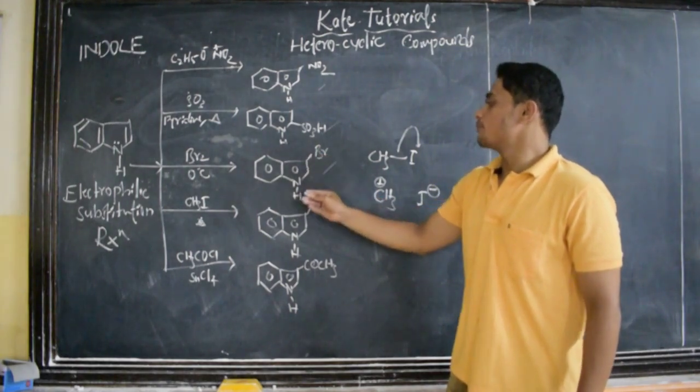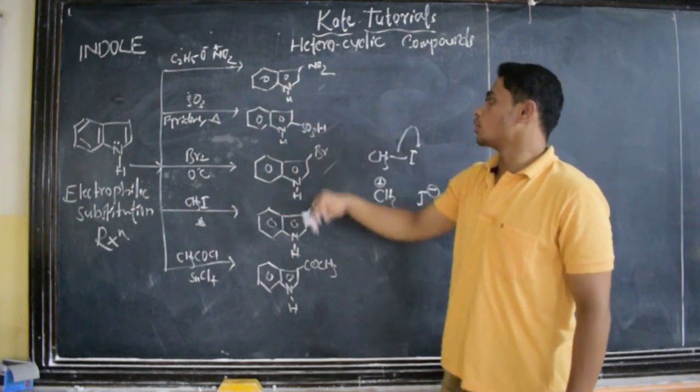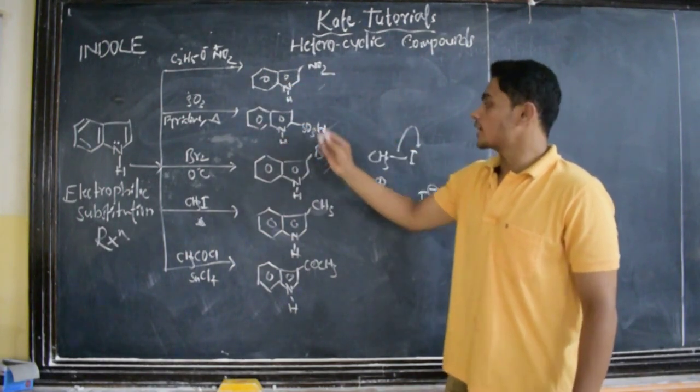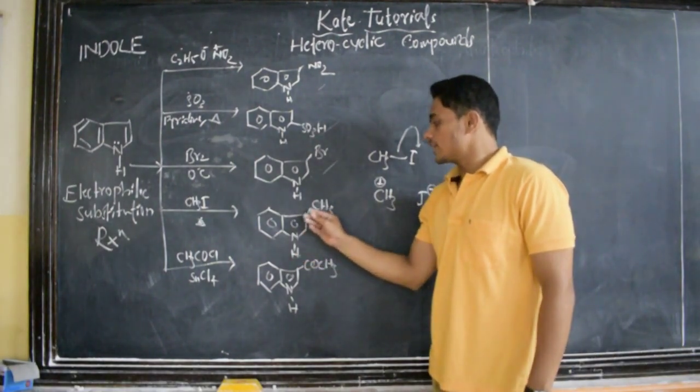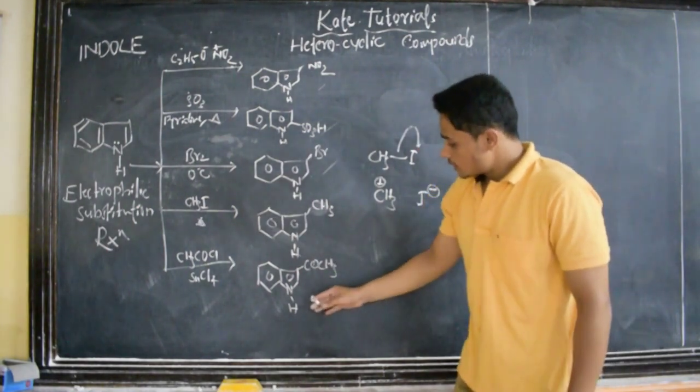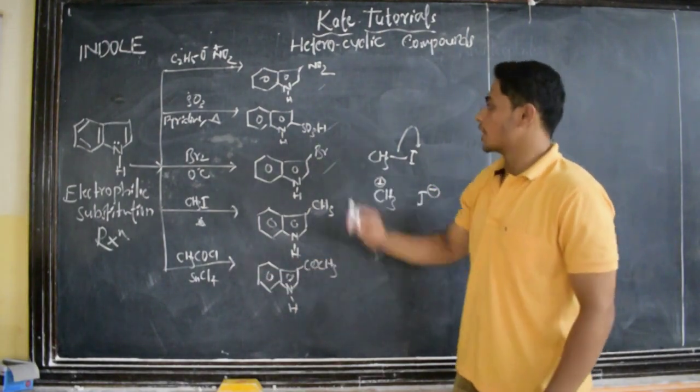This is 3-bromo indole. This is 3-nitro indole. This is indole-2-sulfonic acid. And this is 3-methyl indole. And this is 3-acetyl indole. These are the products.